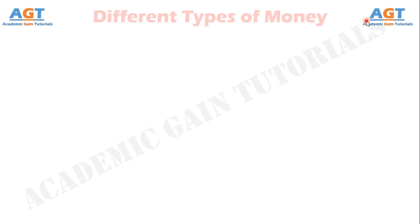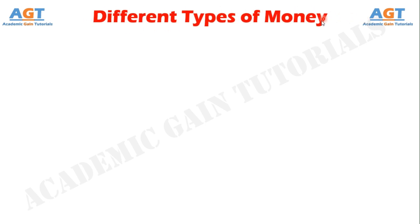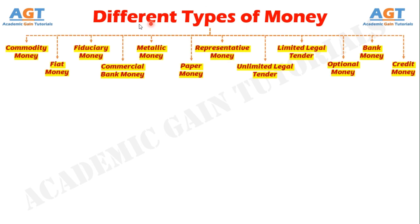The word currency refers to the aggregate of coins and paper notes, paper money. The currency in broad view is the tangible medium of exchange. Almost 180 currencies exist around the world, as per the United Nations.